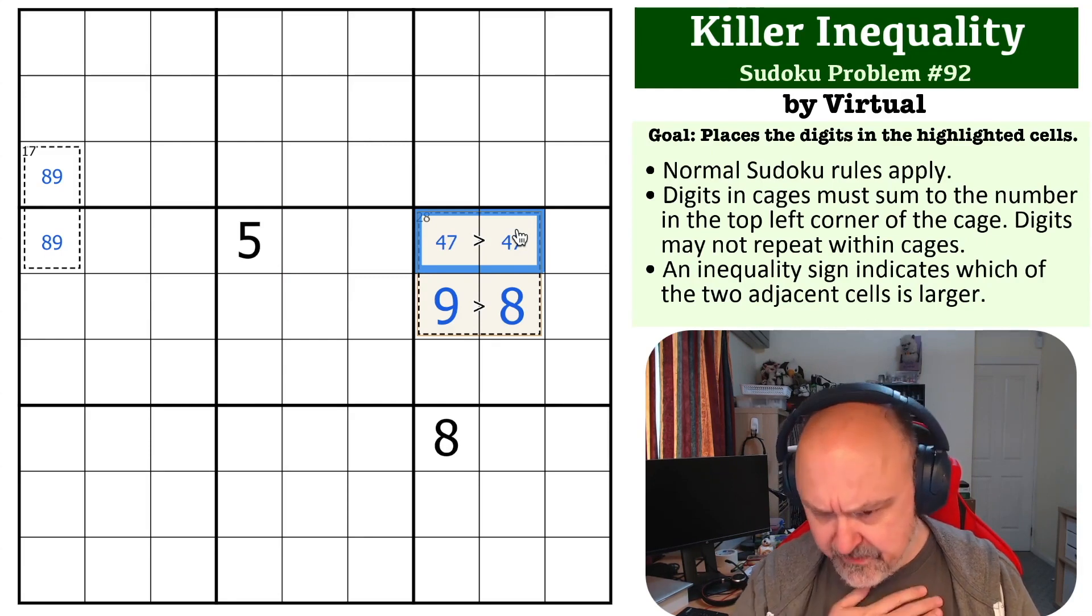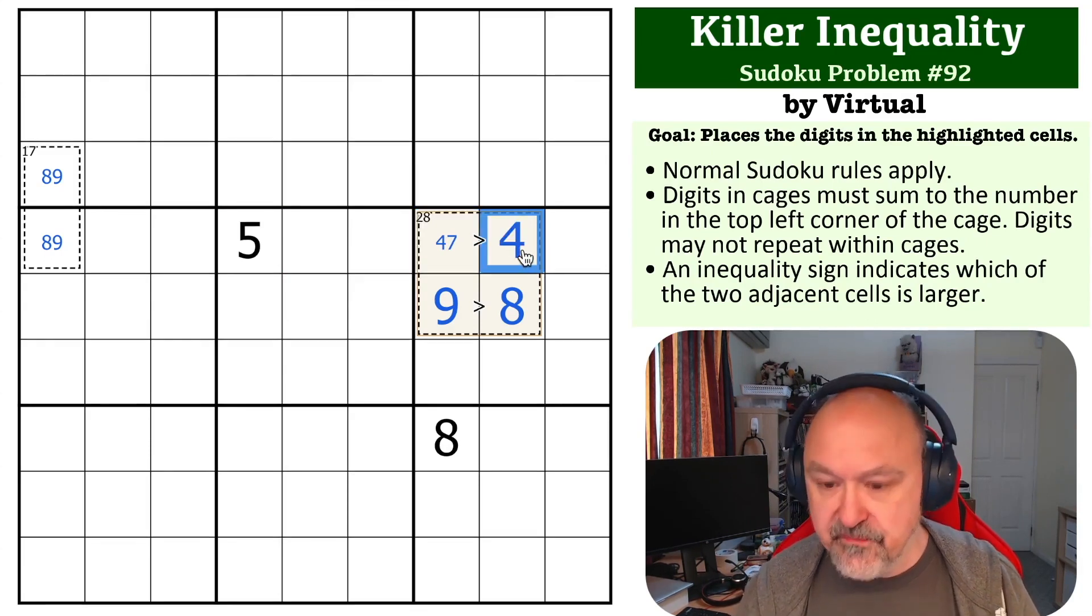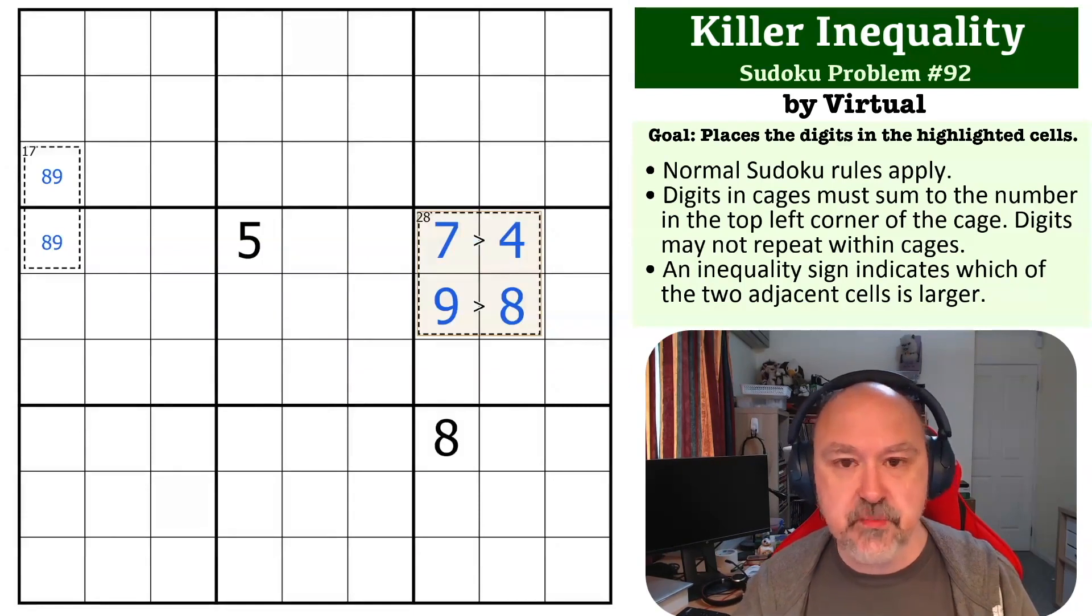And the inequality sign gives us the order. The 4 is lower than the 7, and that is the solution to the problem.